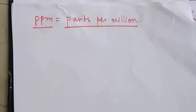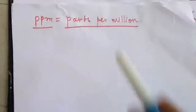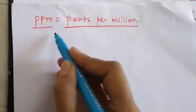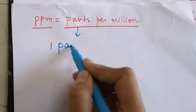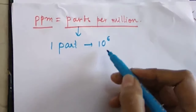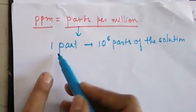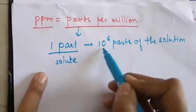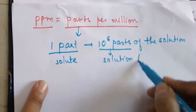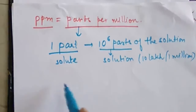Let us understand one more concentration term: parts per million, which we denote as PPM. PPM is generally used to denote the concentration for very dilute solutions. What we understand by parts per million is that one part of the solute is present in one million parts — that is 10 to the power 6 parts — of the solution.